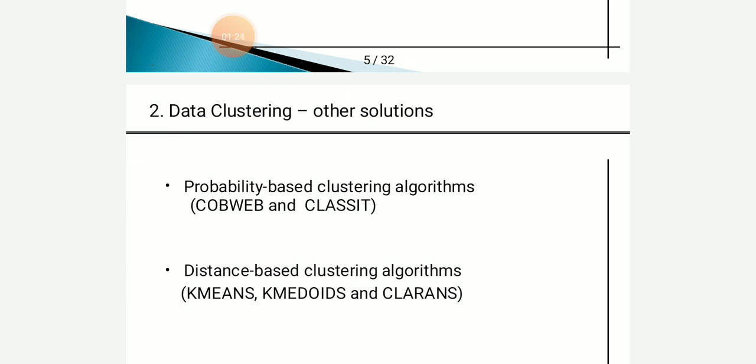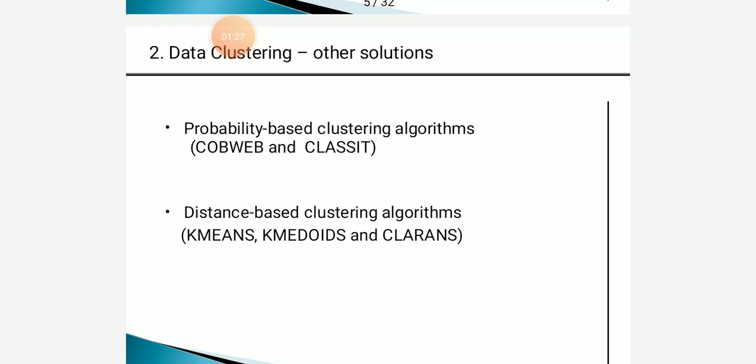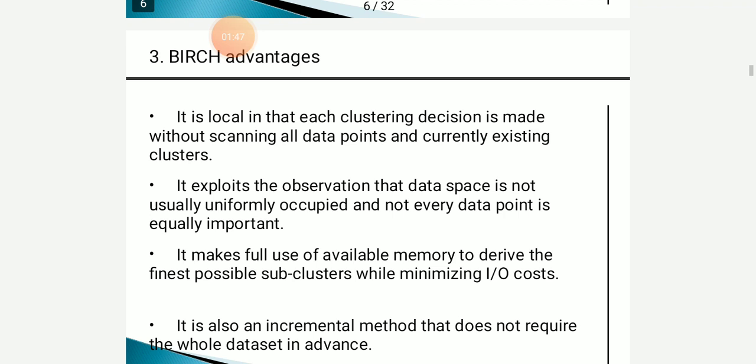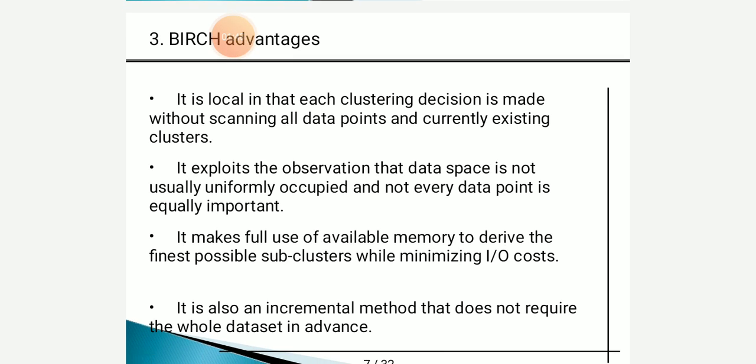There are two alternative solutions to data clustering besides BIRCH. The first is a probability-based clustering algorithm, for example, COBWEB. The second is a distance-based clustering algorithm, for example, K-means and K-medoid. The main advantages of the BIRCH algorithm are: it is local in that each clustering decision is made without scanning all data points and existing clusters; it exploits the observation that data space is not uniformly occupied and not every data point is equally important; it makes full use of available memory to derive the finest possible subclusters while minimizing IO cost; and it is an incremental method that does not require the whole data set in advance.